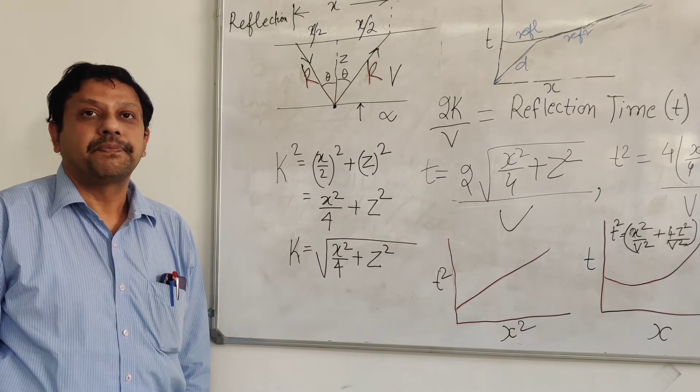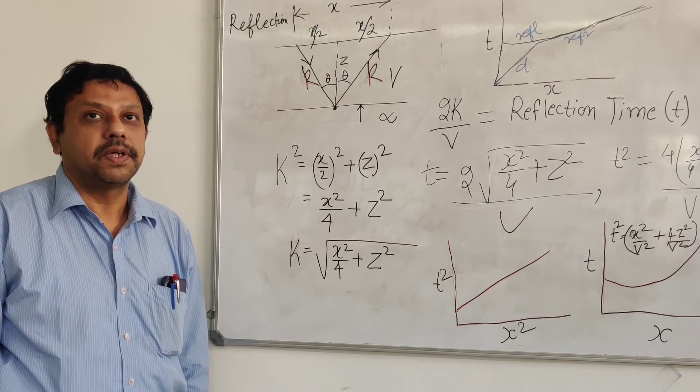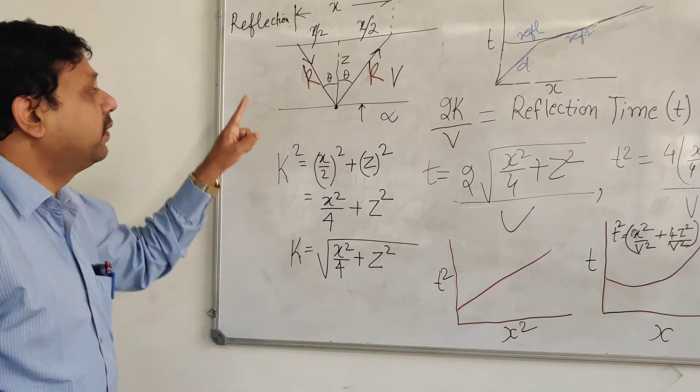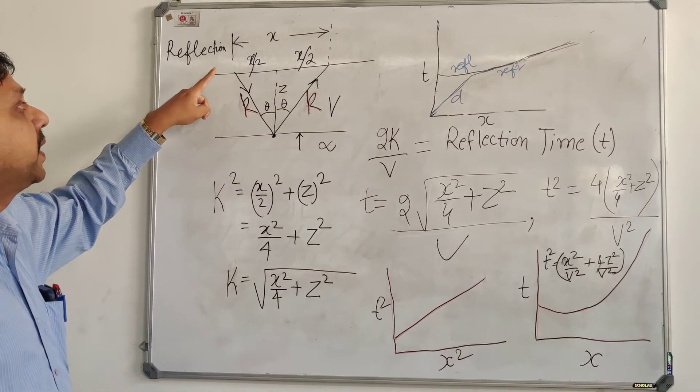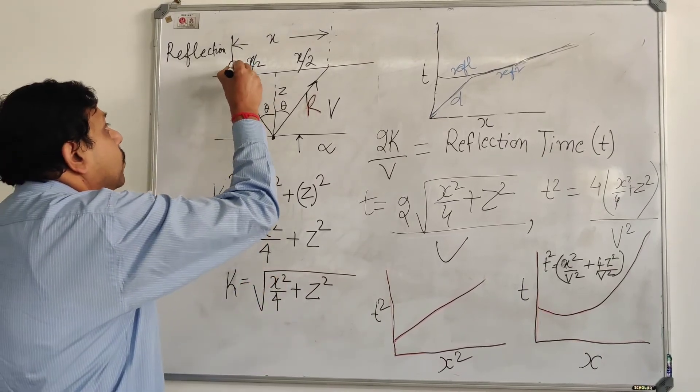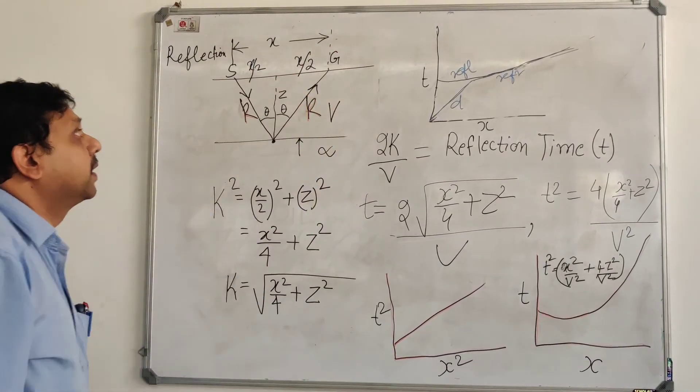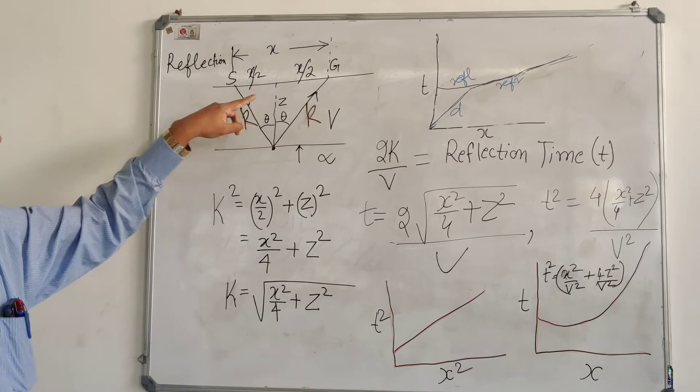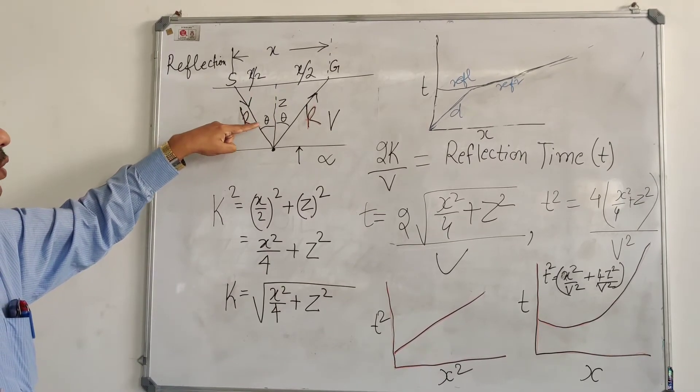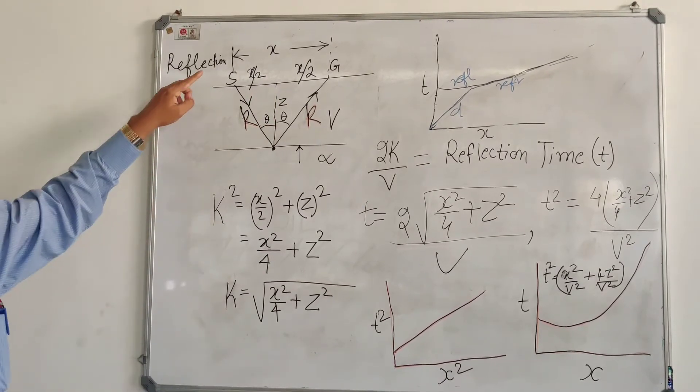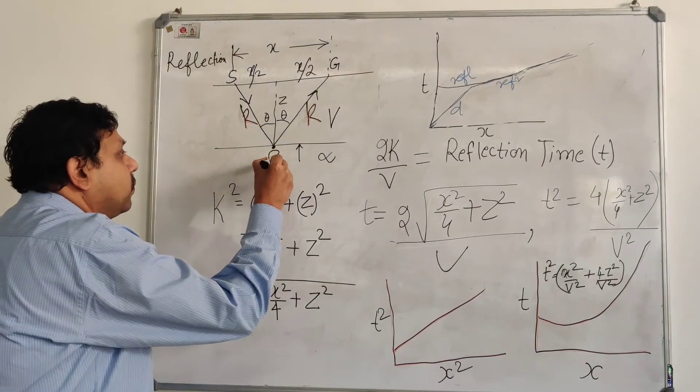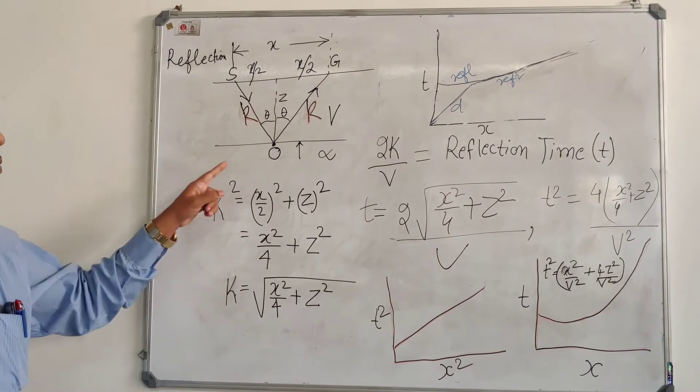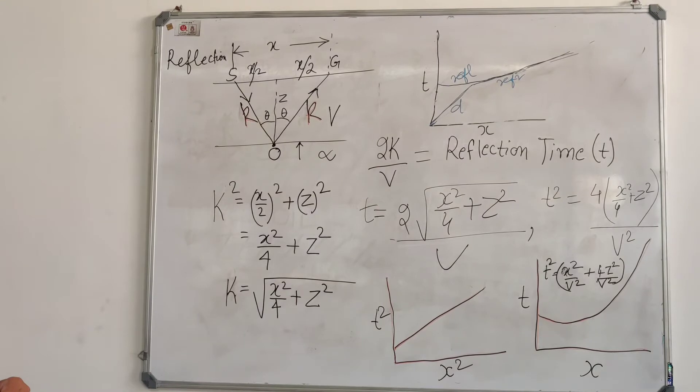After the refraction survey, we have to do the reflection survey, and I will show you for a 2-layer case how the equation should be derived. Look at the figure here that the offset between the source and geophone is X, and the ray has gone down here to the reflecting surface and come back here. It has made two angles, theta and theta. And the distance between the source to the point which is called the CDP point O is K, and from the CDP point to G is also K.